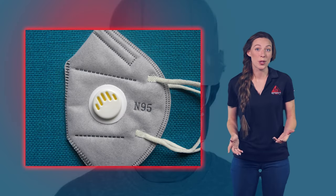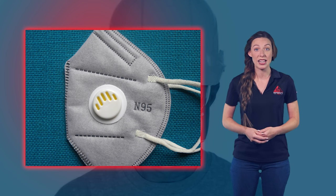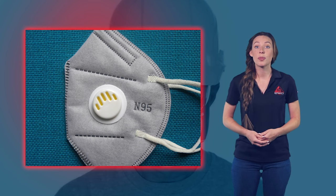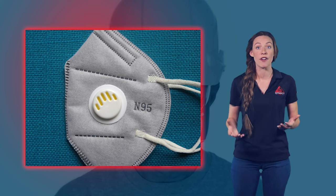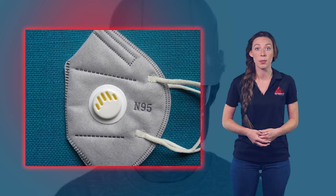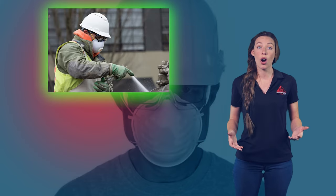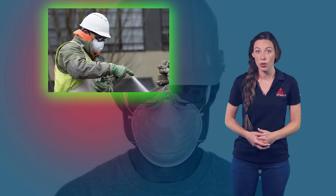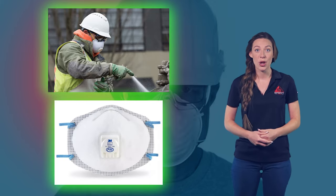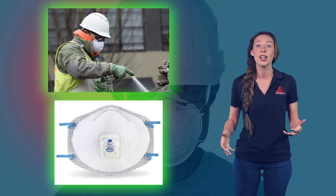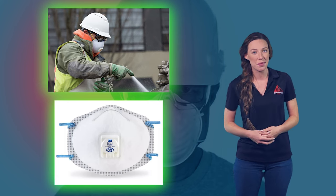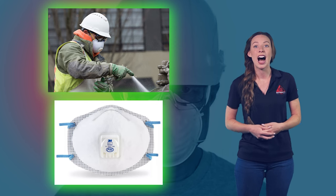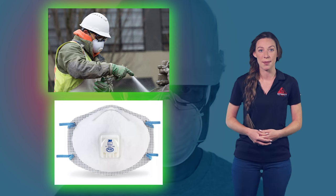Most disposable respirators are labeled N95, which means they have been tested to block up to 95% of non-oil-based particles. There are also R (resistant to oil) and P (oil-proof) ratings, as well as filters that can filter out 99% or 100% of airborne contaminants.